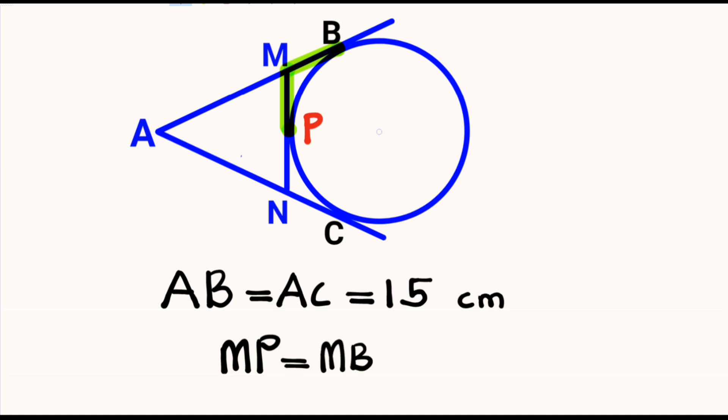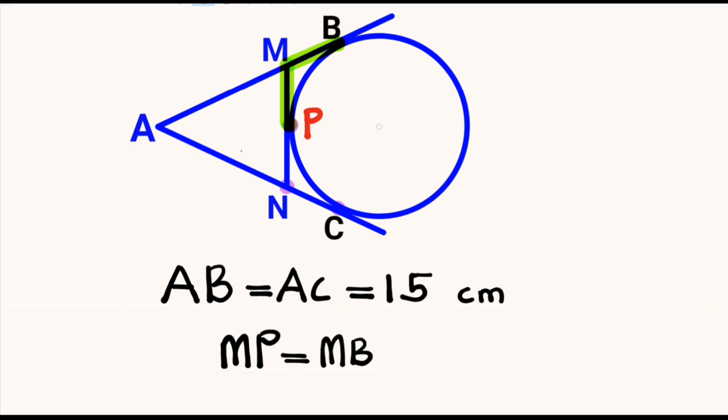We have another external point at N, and a tangency at C, and another tangency at P, so the length NP and NC will be equal. So NP is also equal to NC.